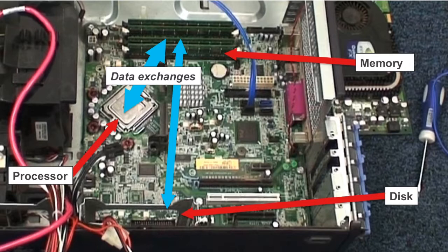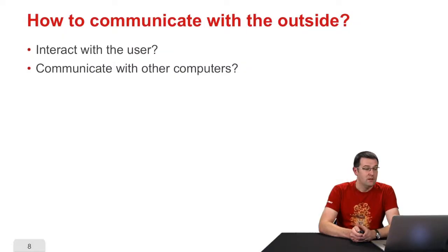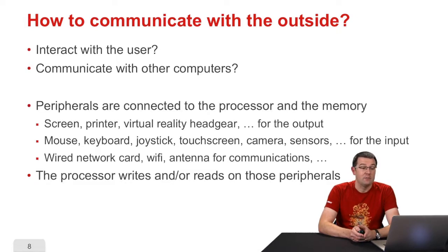That's mostly what happens inside a computer. We also have to look at how the computer communicates with the outside — particularly how it interacts with the user and with other computers. For that purpose, there are peripheral devices connected to the processor and the memory. Regarding the output — everything sent to the outside from the computer — there is the screen, the printer, loudspeakers, etc. Regarding the input, when we are giving instructions or information to the computer, there is the mouse, the keyboard, sensors, cameras, etc.